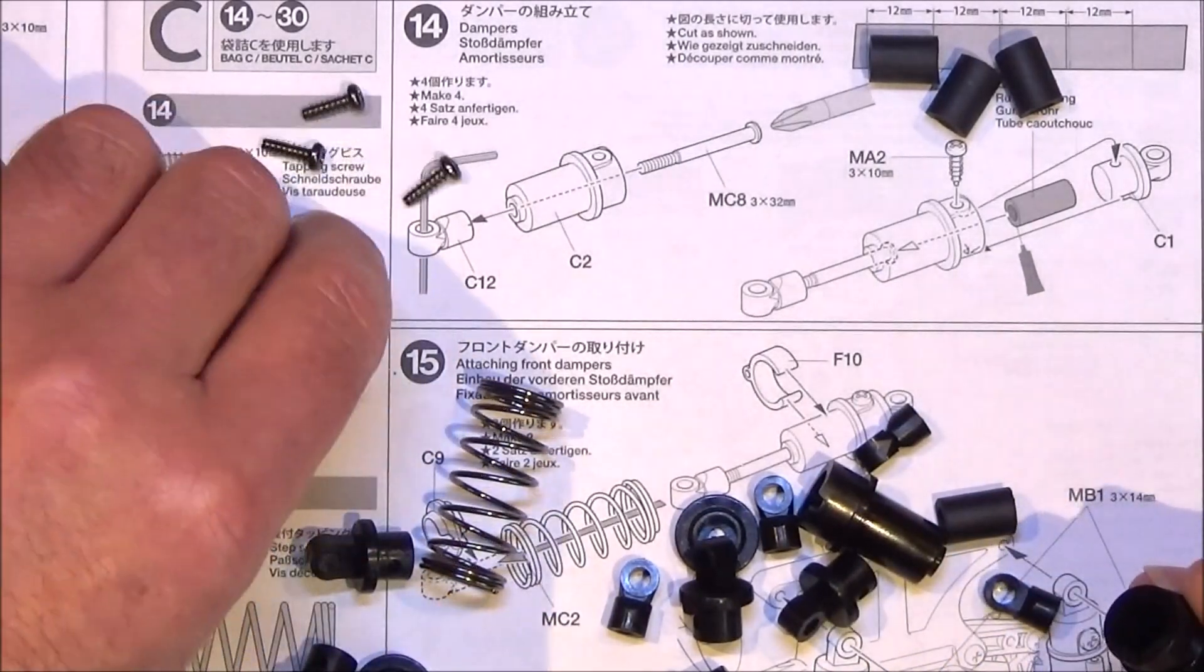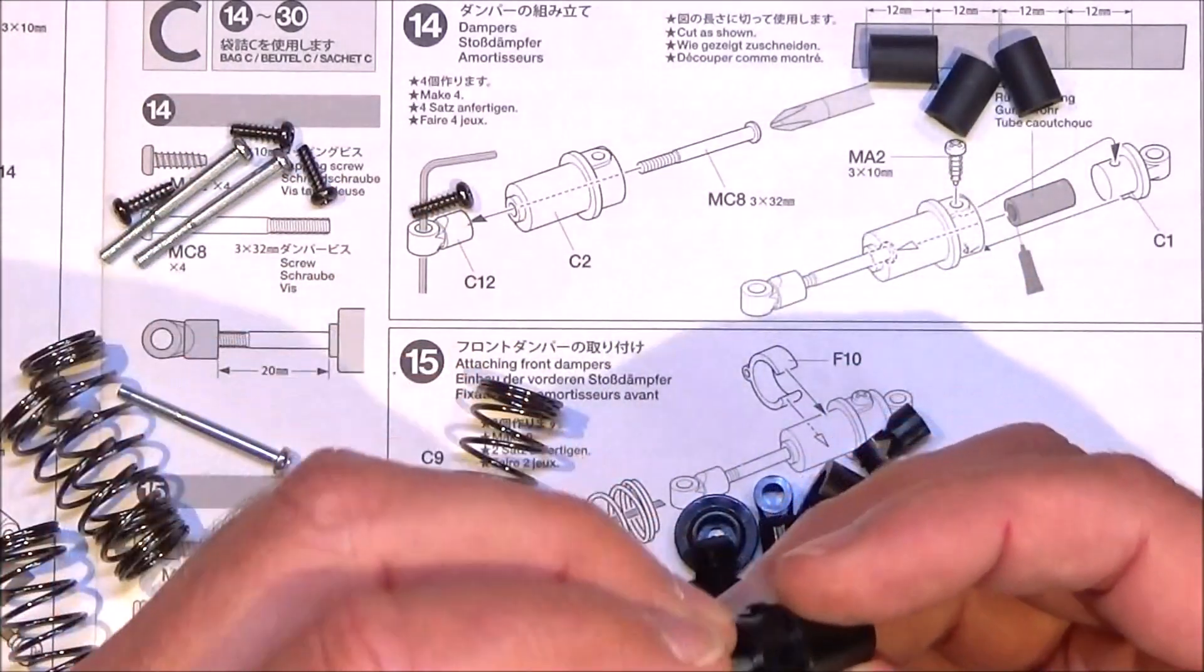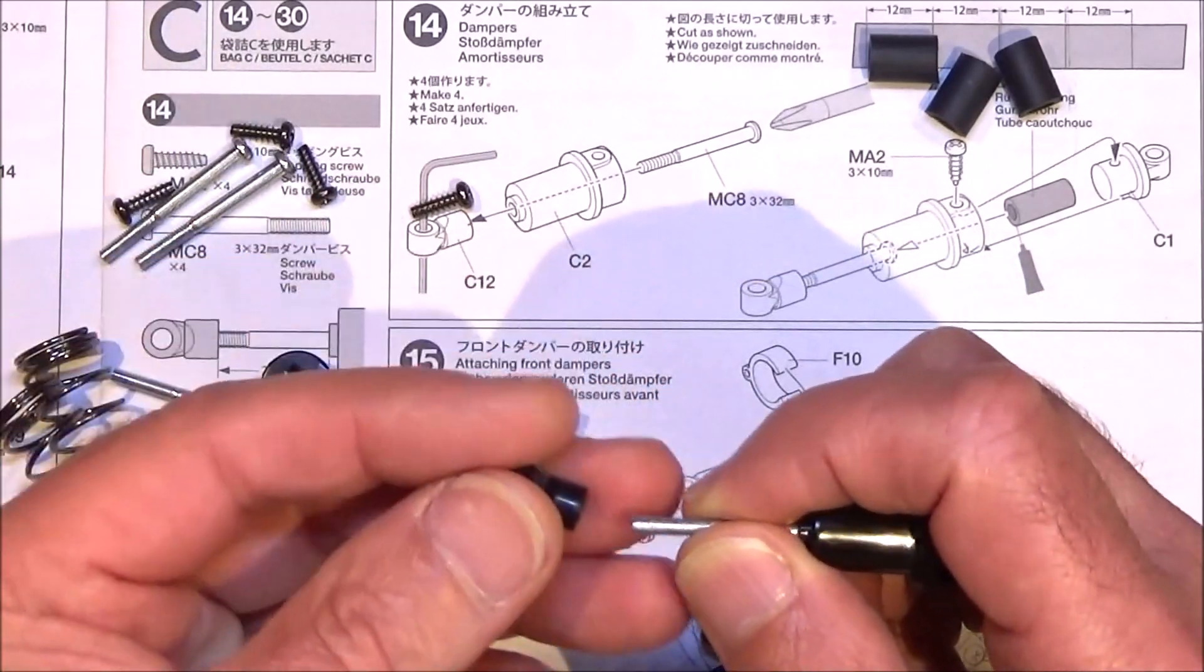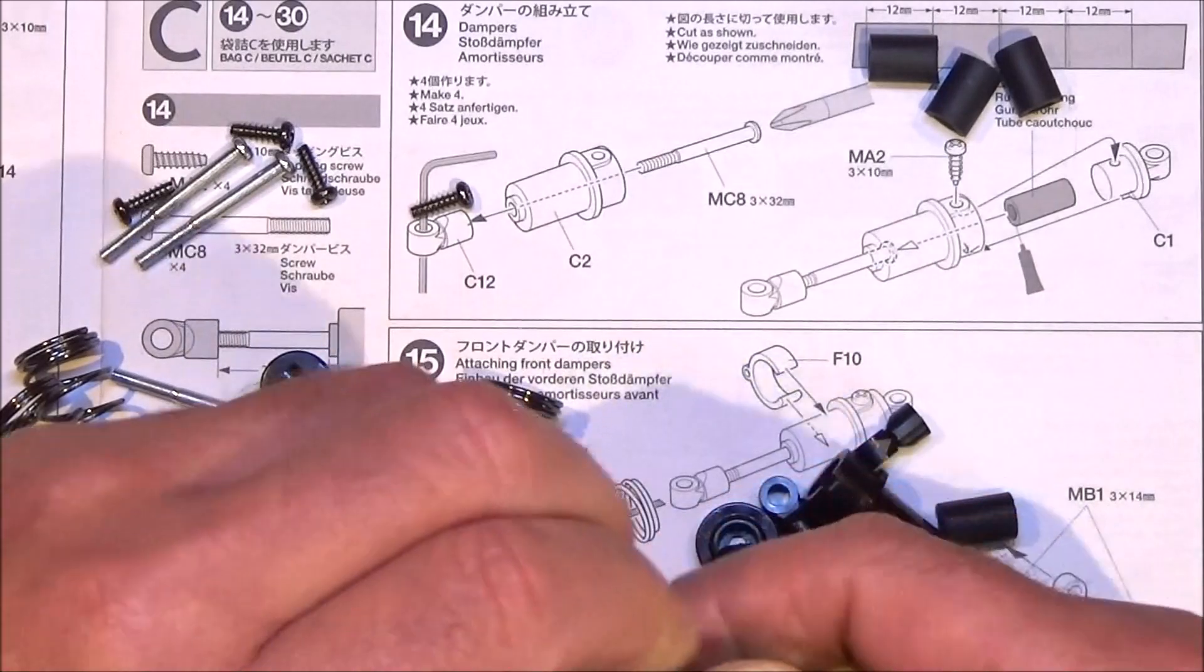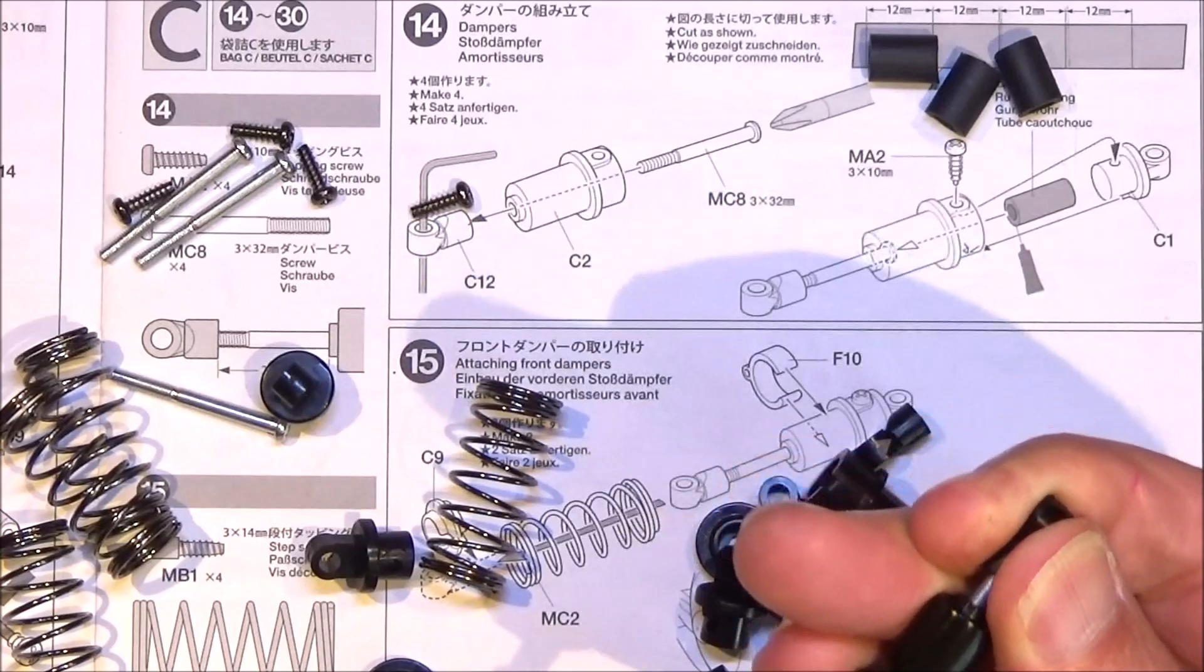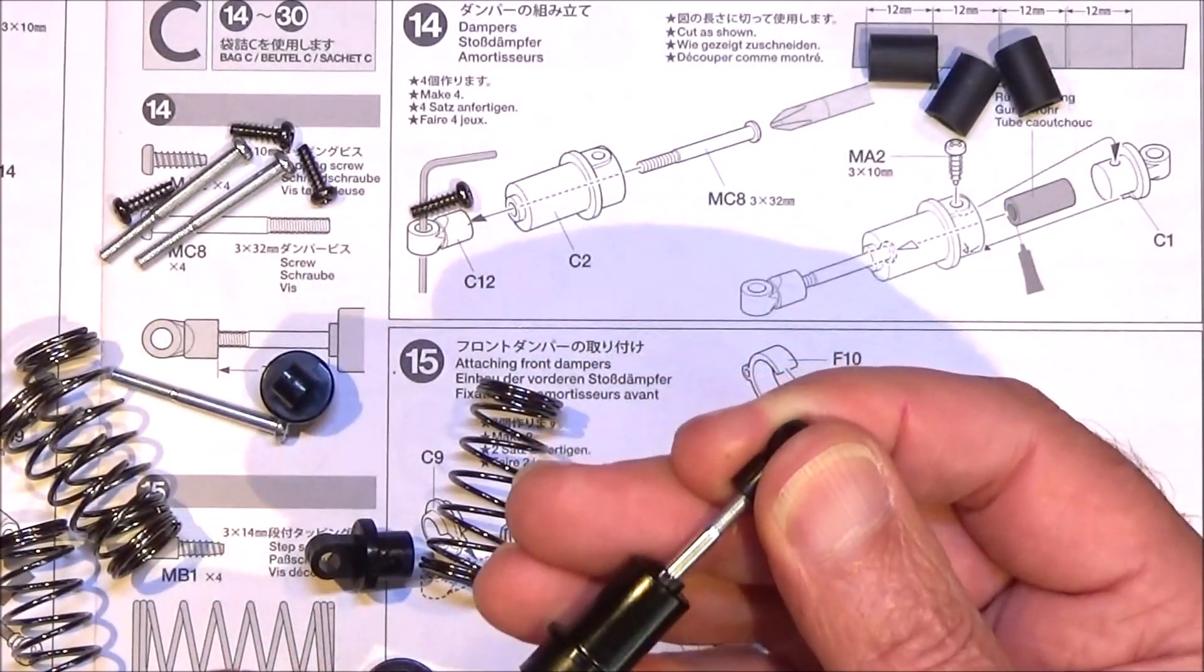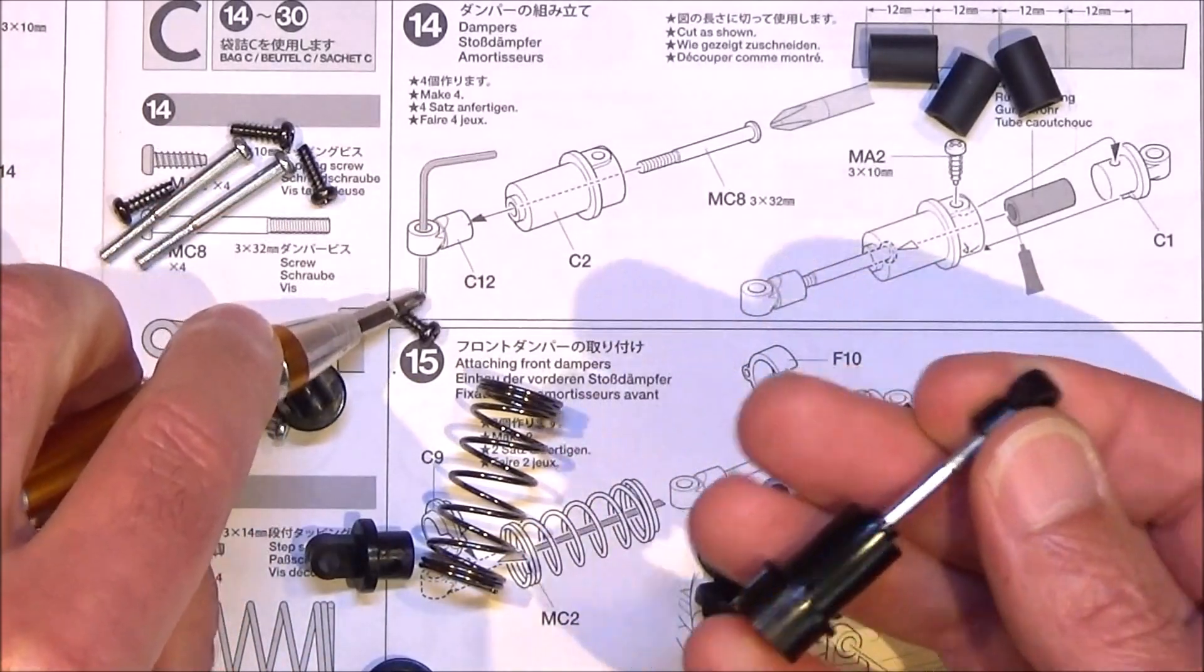It's quite simple really. You just get the shock body, get one of the long screws, the 3x32s, and plunk that through the shock body itself. Then you've got to screw on the shock bottom which is C12 and simply screw that on. You can just get a screwdriver in there and tighten it up. Don't have to go too mad.